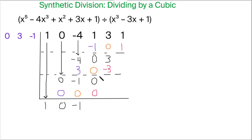And we add, so 0 and 0 adds to 0, 3 and negative 3 adds to 0, so that 0 we're going to drop down here.